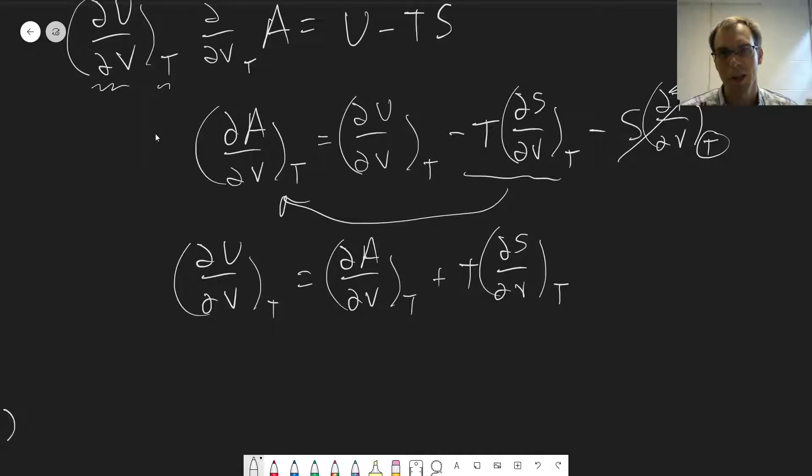If we go back and look at the Maxwell relations and other relationships here, we can see there's some substitutions we can make. So here we can use a Maxwell relation to say that this is T times dP/dT at constant V. That was the Maxwell relation we used in the previous video. And this term here is equal to negative pressure.